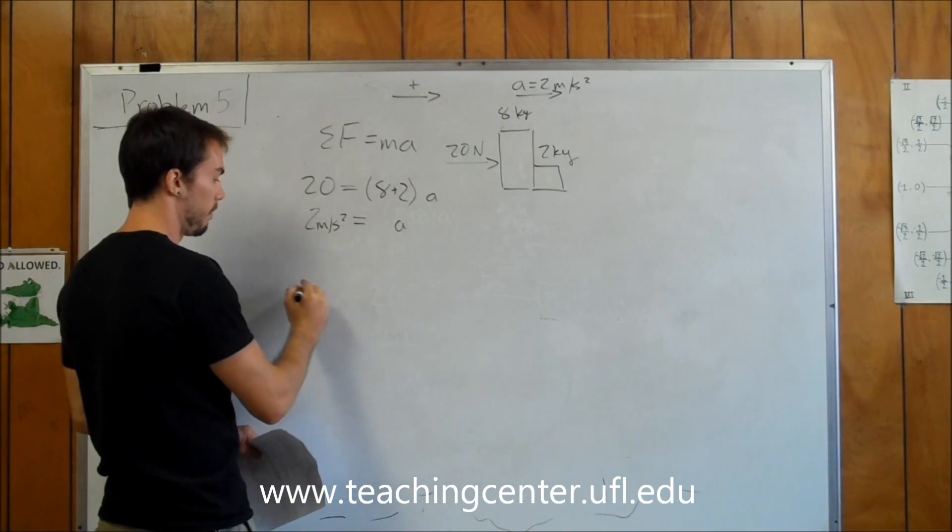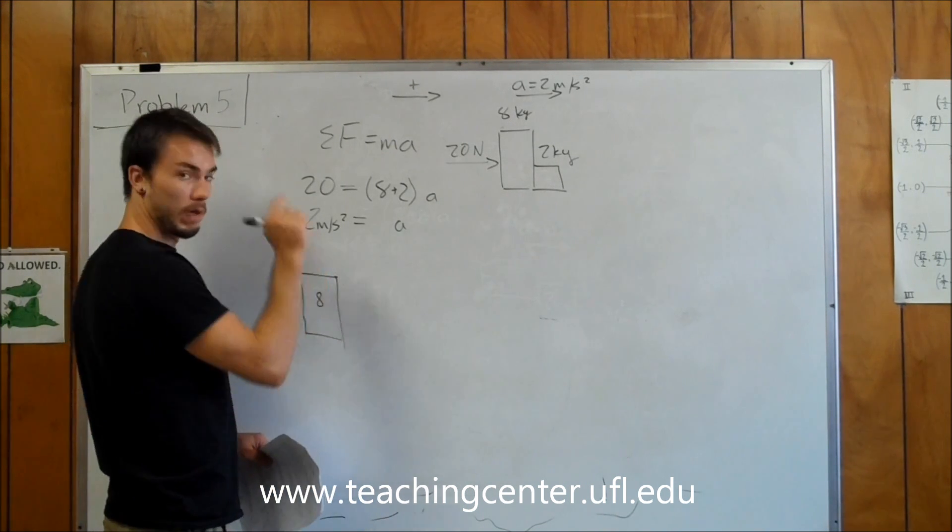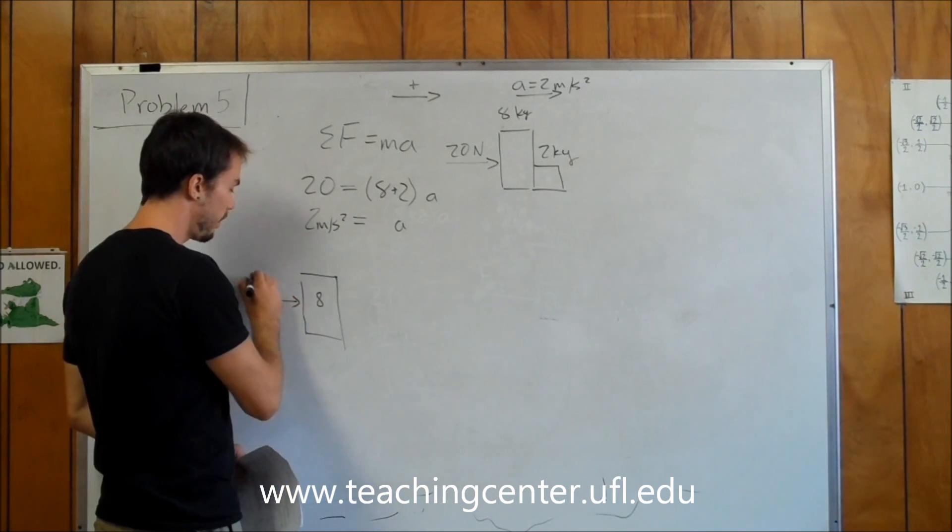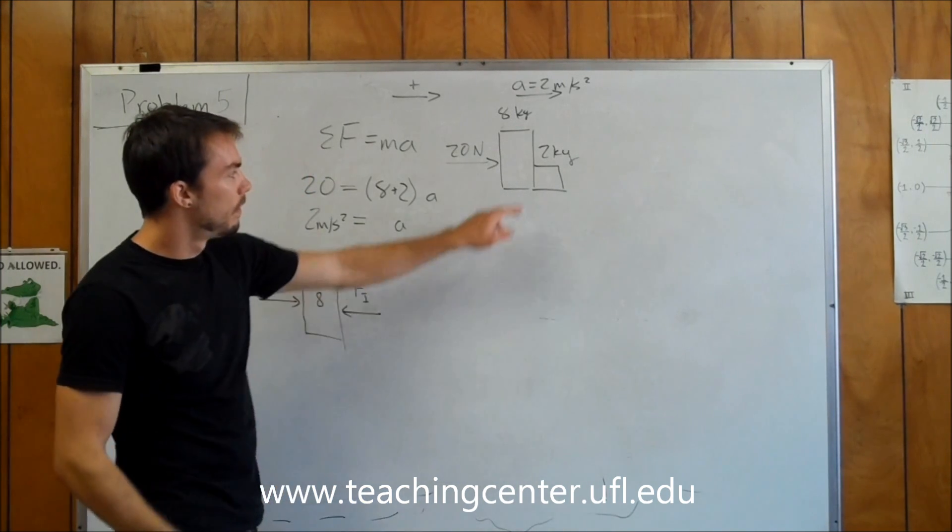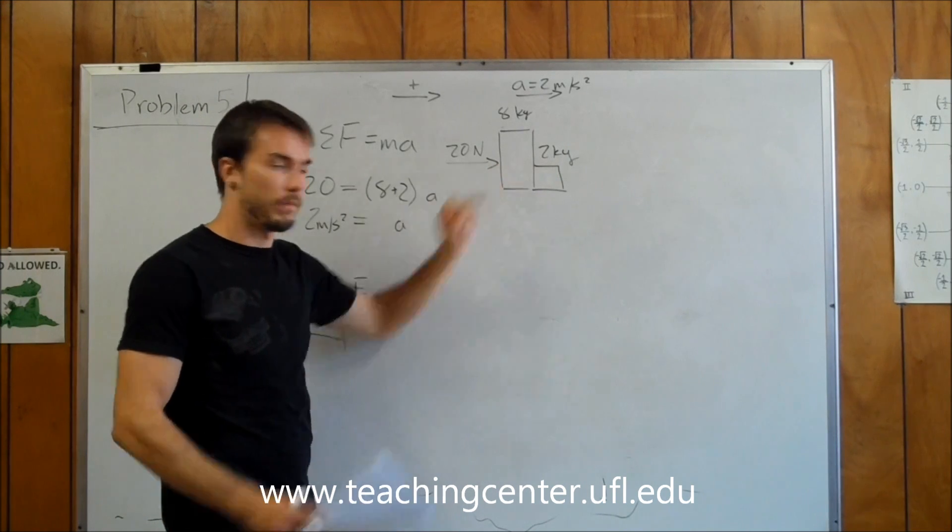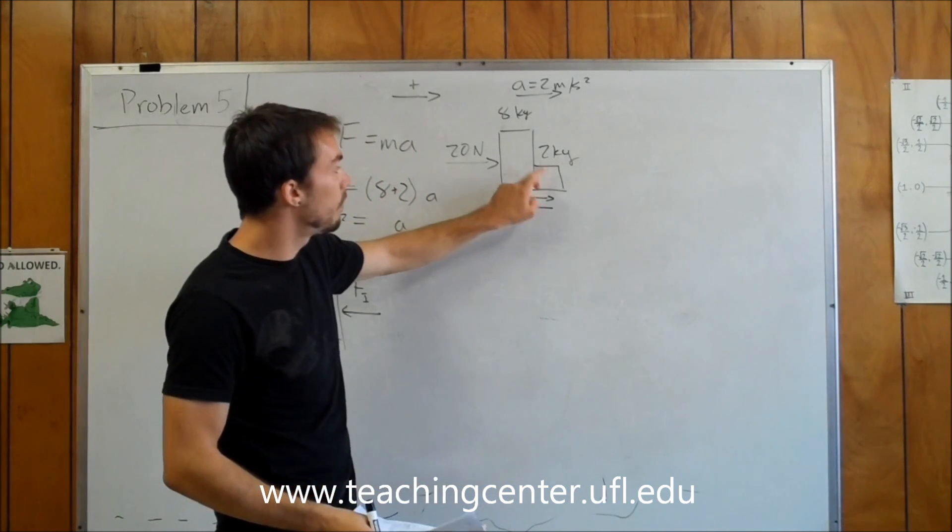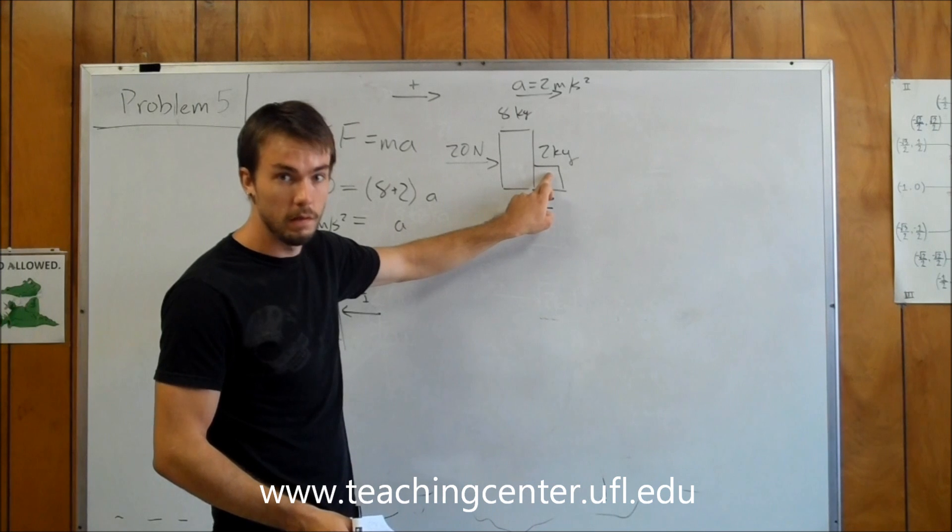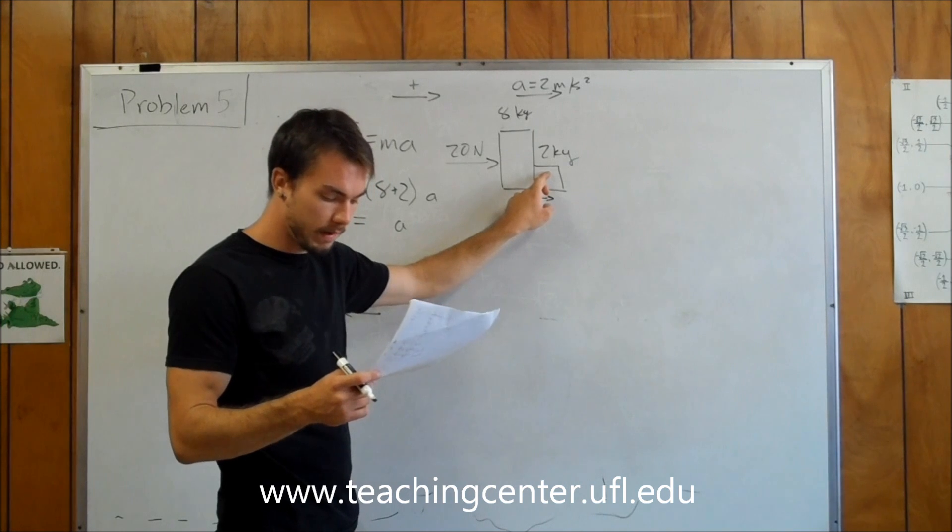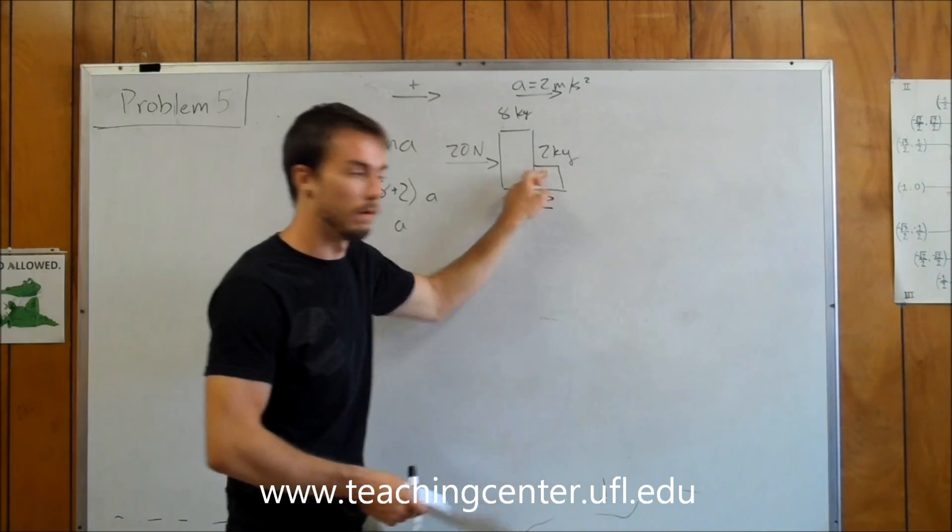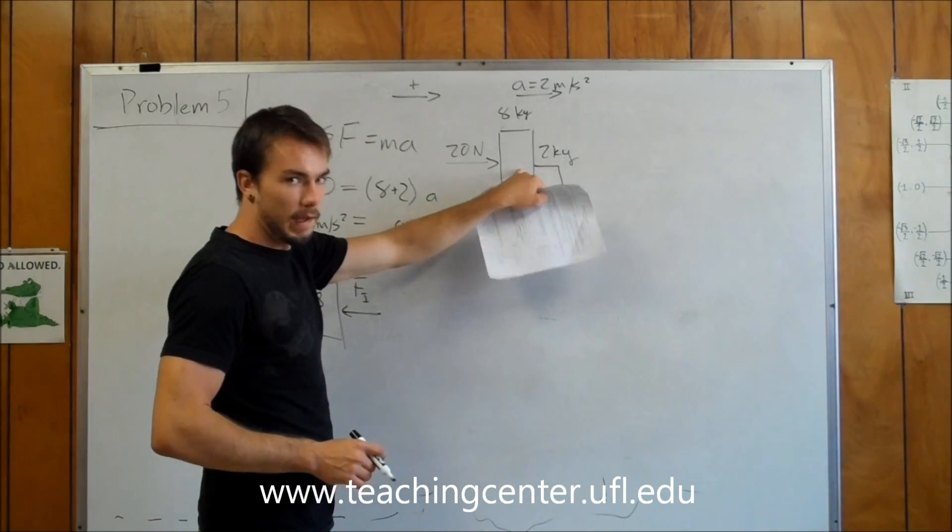So if we look at the 8-kilogram, then we know it's accelerating 2 meters per second squared to the right. We know it has a 20-newton force. We know it has that internal force of this 2-kilogram block pushing on it. And don't forget, the internal forces are going to be equal in magnitude in opposite directions. So you can solve for the 2 on the 8, or the 8 on the 2. It doesn't matter which one you do, because they're going to be exactly the same value. They could have phrased this question either the force of the 2 on the 8, or the 8 on the 2, and it would have given you the exact same answer. So I'm just going to use F sub i to represent both the 2 on the 8 and the 8 on the 2.